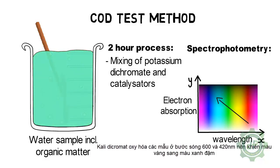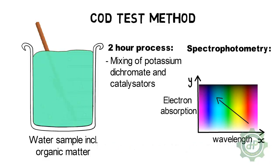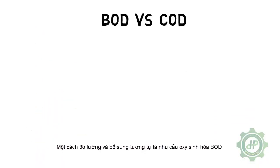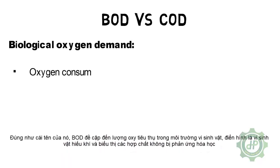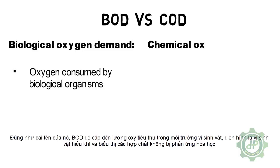Since the potassium dichromate shifts from yellow to dull green as it oxidizes, the samples can be read at wavelengths of 600 and 420 nanometers. Another similar and complementary measurement is the biological oxygen demand, or BOD. As the name suggests, BOD refers to the oxygen consumed in a solution by biological organisms, typically aerobic microorganisms.